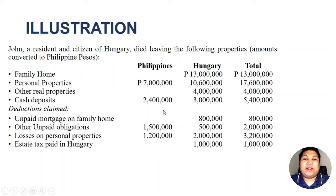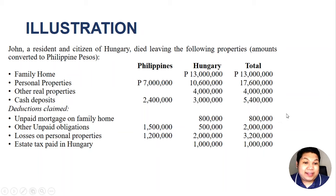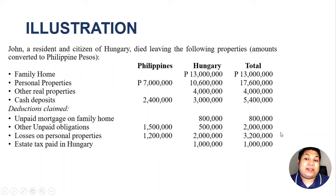Before going to the solution, let's identify which items are deductible as LIT. The unpaid mortgage on the family home is considered indebtedness — deductible despite being related to the family home situated in Hungary: 800,000. The unpaid obligations are also deductible, as are the losses on personal properties. However, the estate tax paid in Hungary is not deductible as LIT. Adding these together — 800,000, 2 million, and 3.2 million — gives us a total world LIT of 6 million pesos. This is the amount we will proportionate based on the NRA's gross estate.